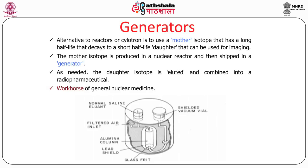Now we come to generators. In generators, a small module can keep the parent radionuclide for a longer time; the parent decays and you get a product — a daughter. The alternative to reactors or cyclotrons is to use a mother isotope with a long half-life that decays to a short-lived daughter which can be used for imaging purposes.